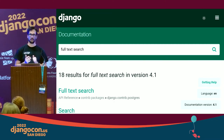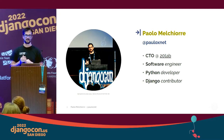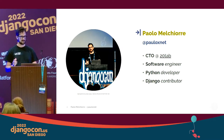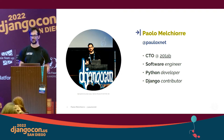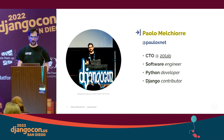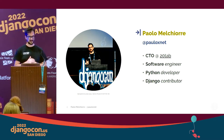The next question is: who am I? I'm Paolo Mecchiorre and I'm the CTO of 20Tab, a Pythonic software company based in Italy. I'm a software engineer, long-time Python backend developer. After using Django for a few years, I became a contributor to the project. I also like attending conferences, taking pictures of talks and then tweeting about them.